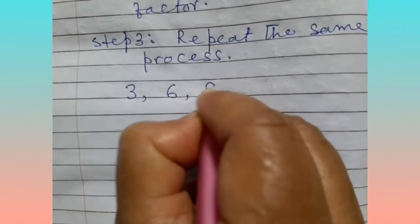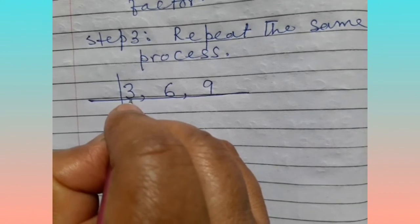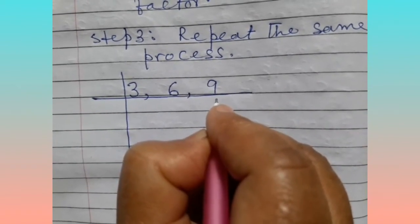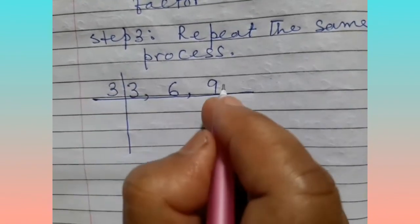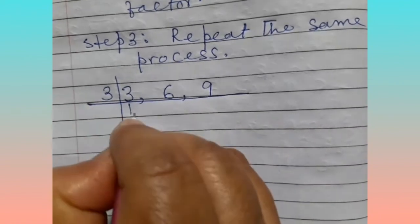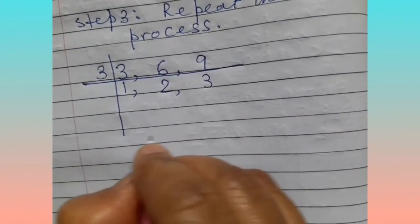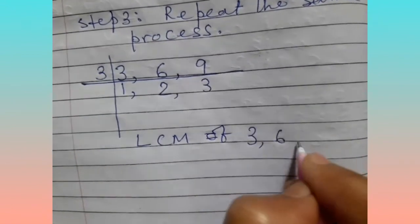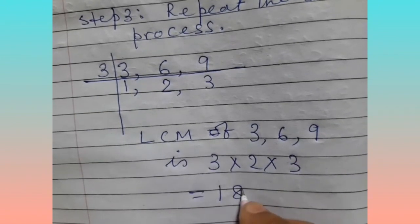Our numbers are 3, 6, and 9. 3 is not divisible by 2, and 9 is also not divisible by 2, so we cannot take 2 as the least prime number. But the next prime number is 3. 3 is divisible by 3, and 9 is divisible by 3. Dividing: 3÷3=1, 6÷3=2, 9÷3=3. Then LCM of 3, 6, 9 is 3 × 2 × 3 equal to 18. This homework is in the description box.